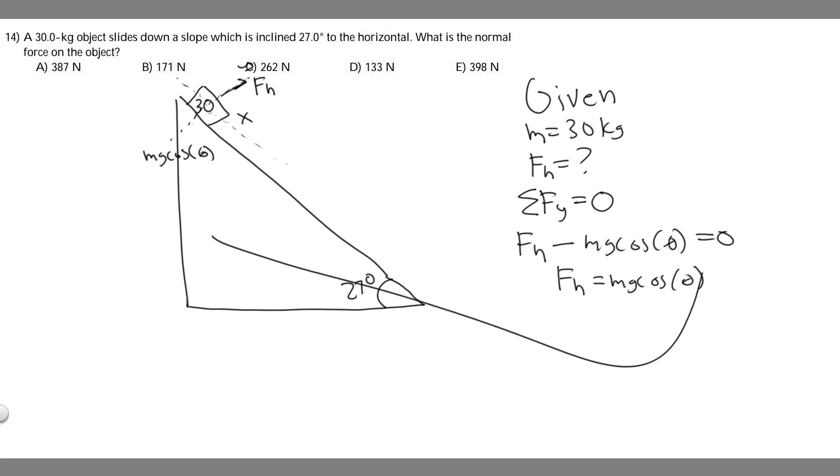So we just need to solve for that. F sub n equals the mass, in this case it's 30, times g which we estimate to be 9.8, and then cosine of theta. Once again theta is the angle of the incline, so 27.